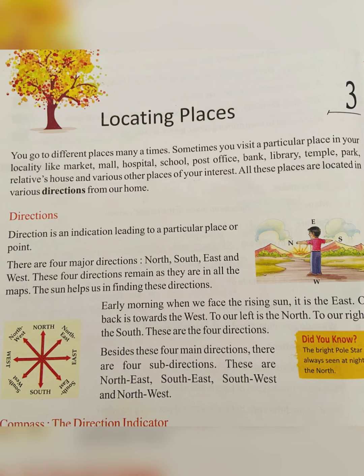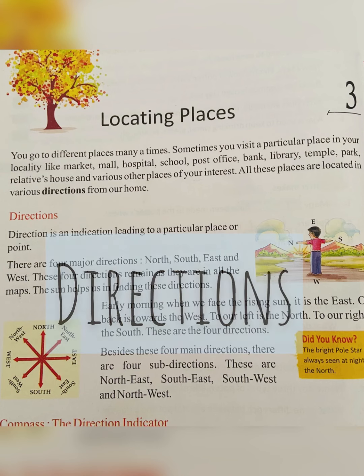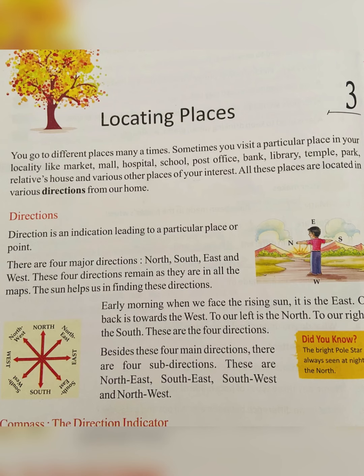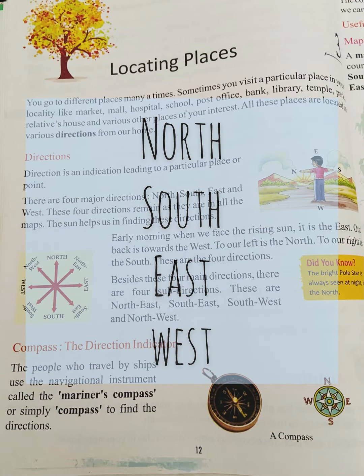Directions are very important to locate places. We usually visit different places, for example malls, hospitals, shops, library, temple, park, or any relative's place. The most important thing when we get out of our house is to know the direction — which direction to turn to go to school, which direction to go to a shop.